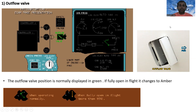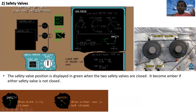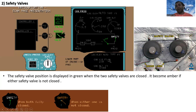Next are the safety valves. As covered in previous lessons, there are two safety valves in the aft compartment at the bulkhead. These are shown with their sense lines. The safety valve position is displayed in green when both safety valves are closed. It becomes amber if either one — or both — are not closed.